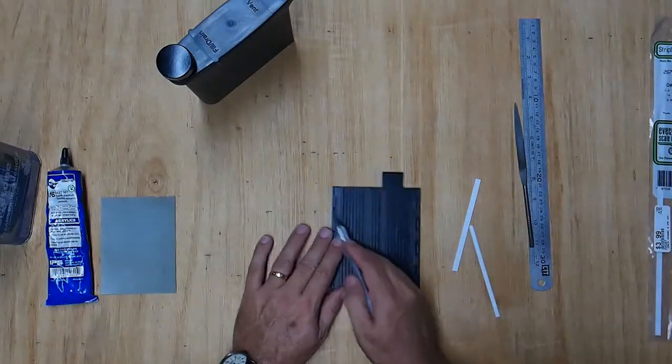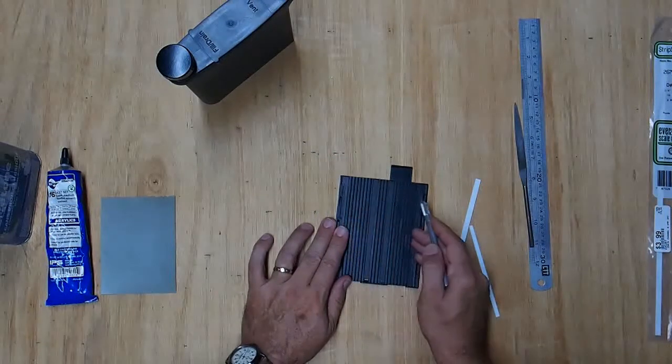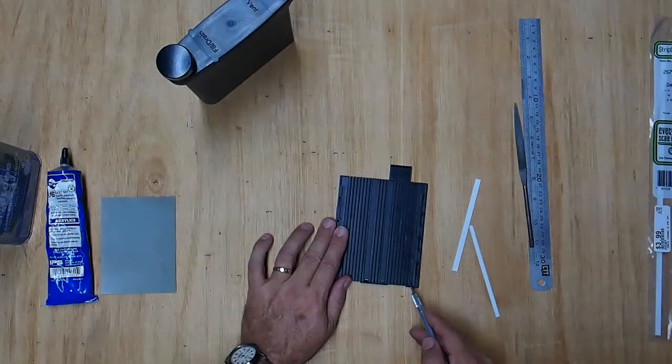Now if you check your film holder, you'll see that from this edge to the outside of this first rib is 89 millimeters.